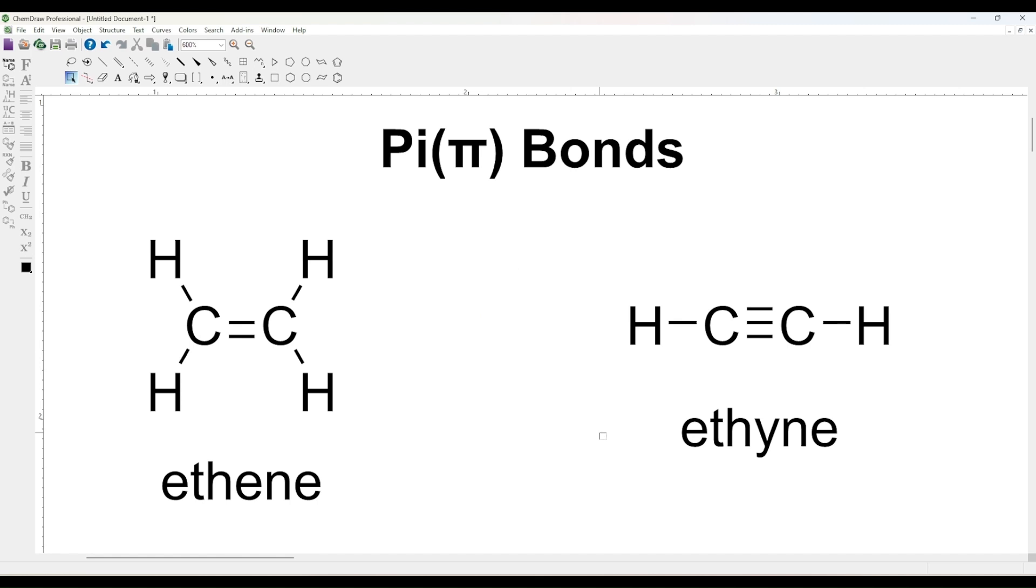Pi bonds are bonds formed by the side-to-side overlap of p orbitals. They're found in double and triple bonds accompanying a sigma bond.